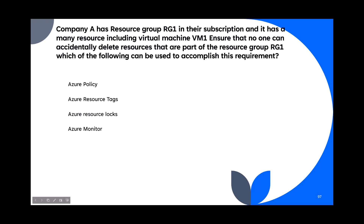Question 97: Company A has a resource group RG1 with many resources including VM1. How do you ensure no one can accidentally delete resources in RG1? Options: Policy, Tags, Locks, Monitor. There are two lock types — read-only (prevents writes) and delete lock (prevents deletion). To prevent accidental deletion, the answer is Azure resource locks (specifically a delete lock).